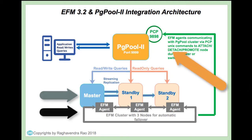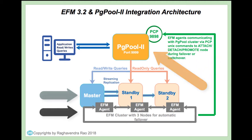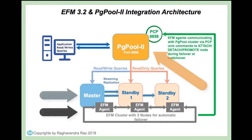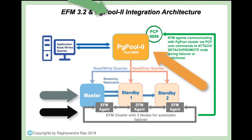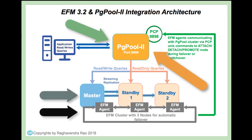Next, configure PG Pool Load Balancer with one master and two standbys for horizontal read scalability. After configuring asynchronous streaming replication, EFM Failover Manager, and PG Pool Load Balancer, we can allow application connections to the database on PG Pool port 9999.